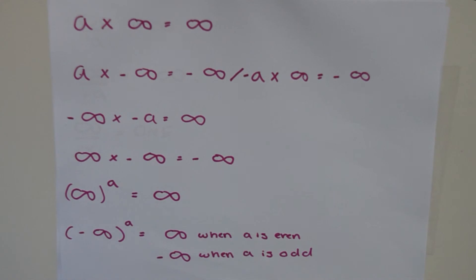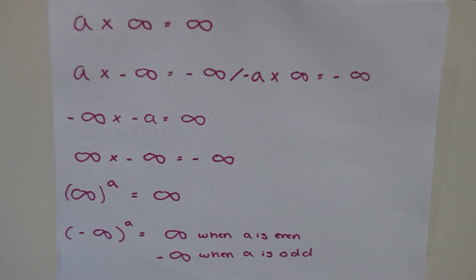The next case: positive infinity raised to the power of 'a', a positive finite number — so infinity squared, infinity cubed, infinity to the fourth, and so on. We are multiplying infinity by itself, making it an even larger number, and we can still call this positive infinity, since any positive number raised to a positive power always remains positive.